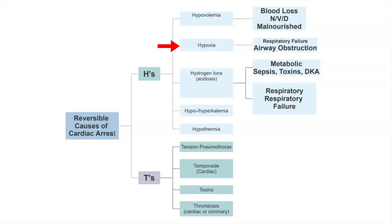The second H is hypoxia. This one is self-explanatory and most likely related to respiratory failure or airway obstruction. Listen for oxygen levels or request the reading during the evaluation of the patient. For this patient, you're going to want to request an ABG to determine what their gases are, and give O2, ventilate, and then possibly intubate.